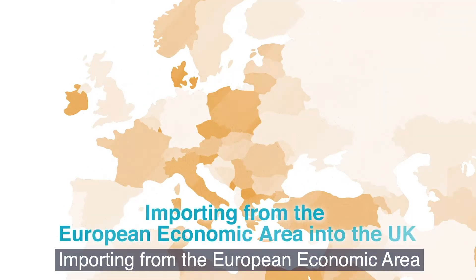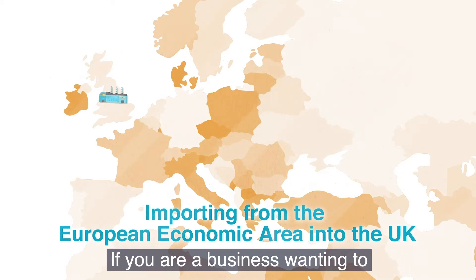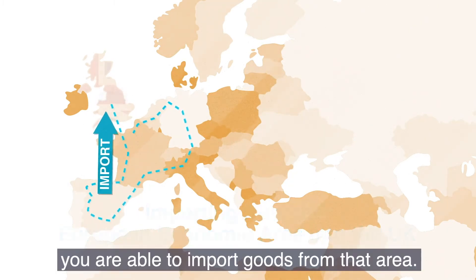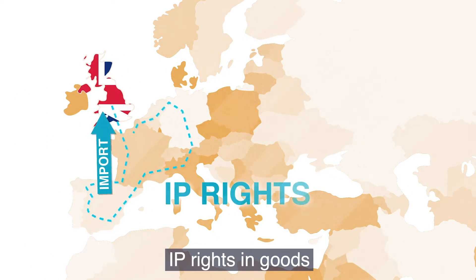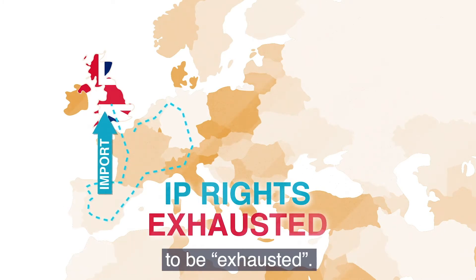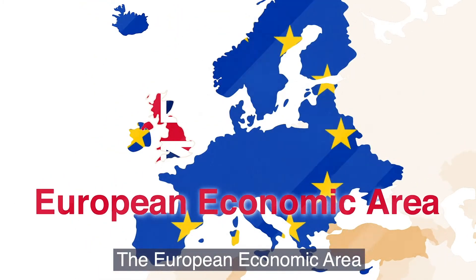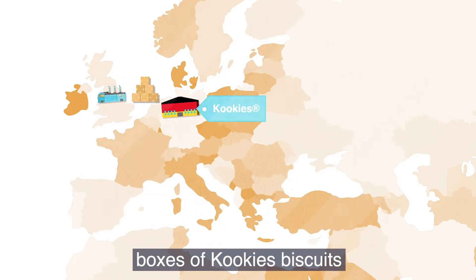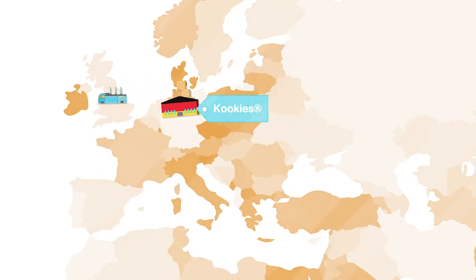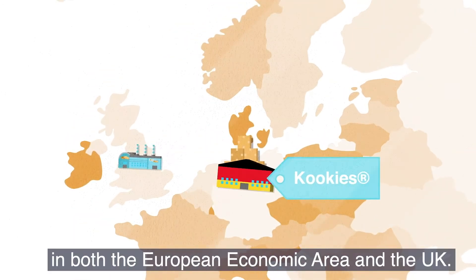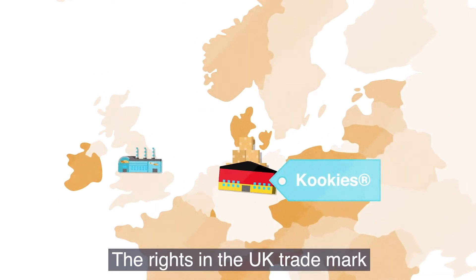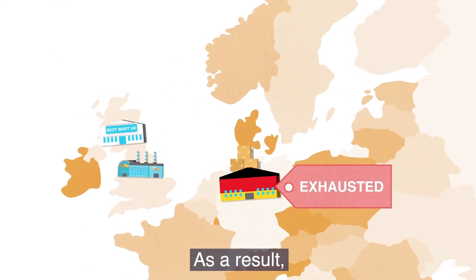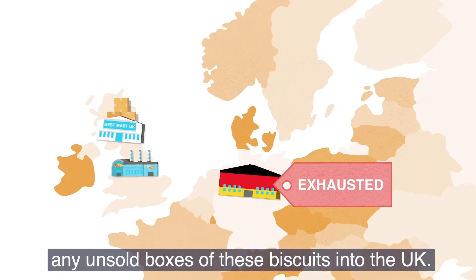Importing from the European Economic Area into the UK. If you are a business wanting to parallel import goods to the UK from the European Economic Area, you are currently able to import goods from that area. This is because the UK considers the IP rights in goods first placed on the market in that area to be exhausted. The European Economic Area comprises European Union member states, Iceland, Liechtenstein and Norway. For example, boxes of cookies biscuits first put on sale in Germany are protected by the trademark 'cookies' in both the EEA and the UK. The rights in the UK trademark are considered exhausted as soon as the boxes were put on the market in Germany, so you will be able to parallel import any unsold boxes of these biscuits into the UK.